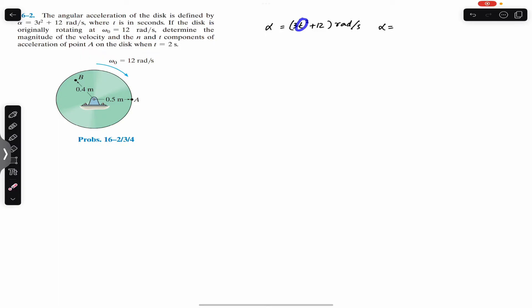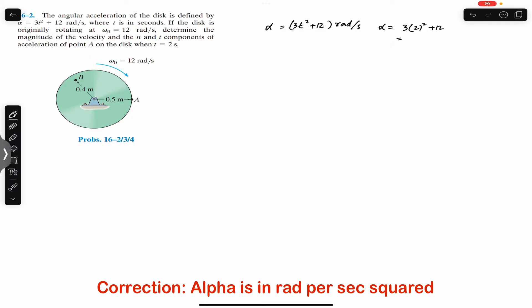At t = 2 seconds, alpha equals 3 × (2)² + 12, which is 3 × 4 + 12 = 24 radian per second squared.